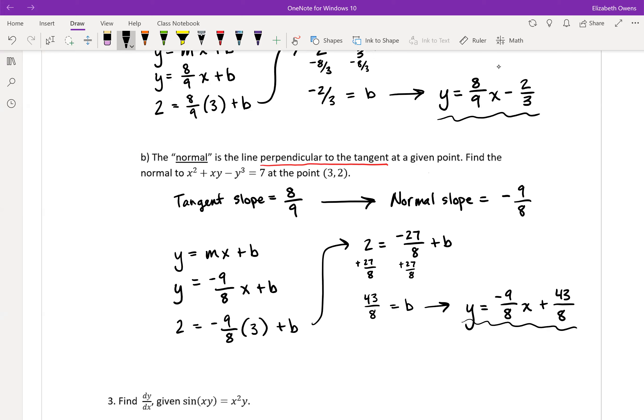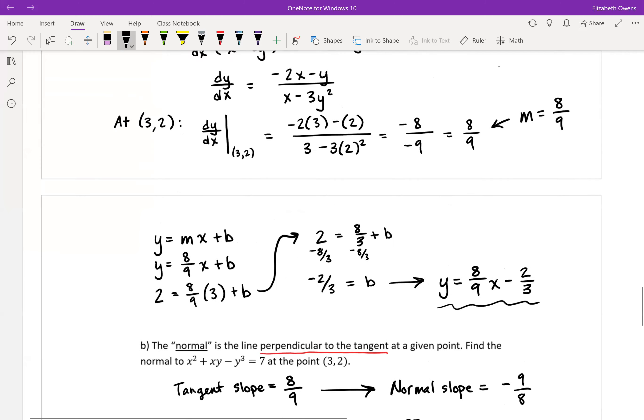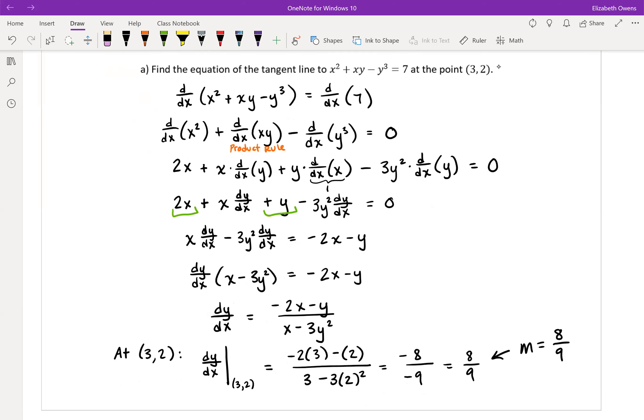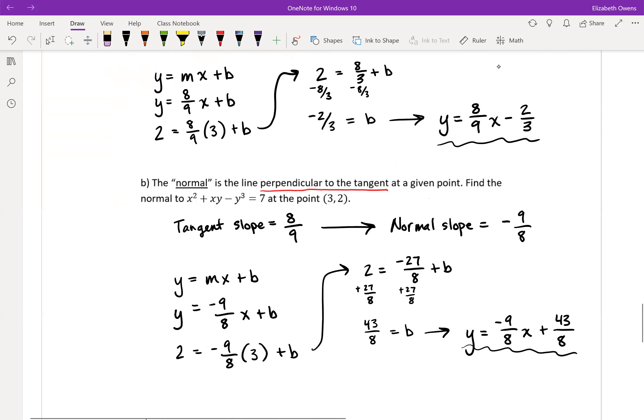And there we go. So no calculus required on this one. But if you had not just found the tangent line at that point, you would have to go through the process of taking the implicit derivative and then plugging in your point to actually find that tangent slope. That part we had already done. That's what made part b so nice. So there it is. That's a normal.